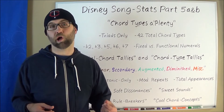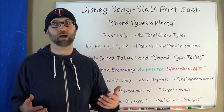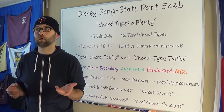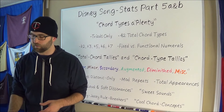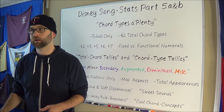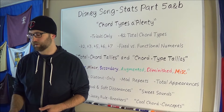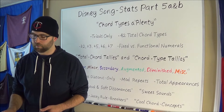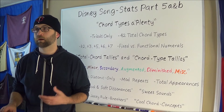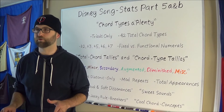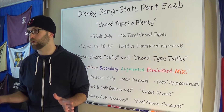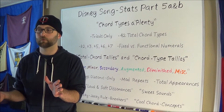So then, how many chord triads are there even out there? In western music there are twelve notes and four kinds of triads: major, minor, diminished, and augmented. This translates into twelve major chords, twelve minor chords, twelve diminished chords, and four augmented chords.